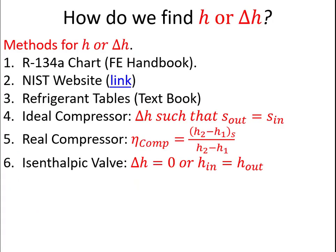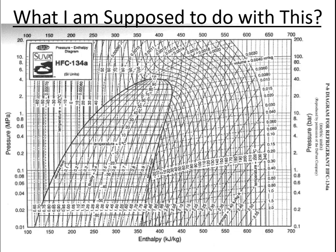Like all our cycles, we ask: what's the fluid, and how do we find our enthalpies or differences in enthalpies? There are several ways to do this. You can use a PH chart from the FE handbook, the NIST website, or refrigerant tables in your textbook. For an ideal compressor, delta H is isentropic, meaning s-out equals s-in. For a real compressor, you use its isentropic efficiency. On the other side of the compressor there's a valve, which we always assume operates isenthalpically — meaning the enthalpy change across the valve is zero, or h-in equals h-out.